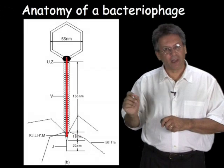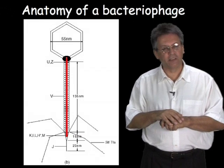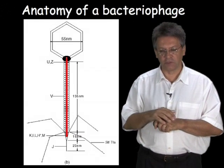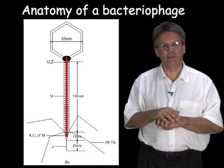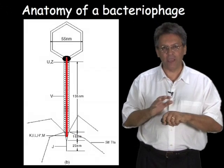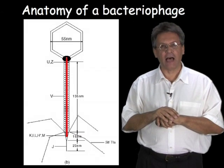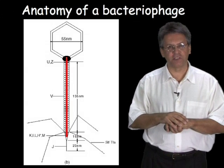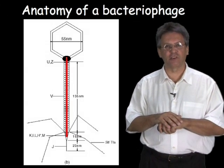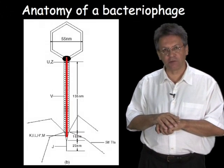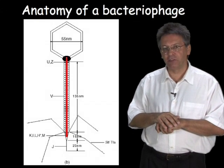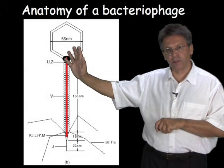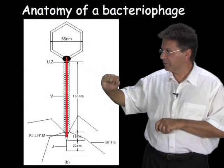It was somewhat later, in the late 1930s and 1940s, that the electron microscope was developed, which has a level of resolution way beyond the light microscope, and was able to show for the very first time what viruses, including bacteriophages, actually looked like. I'll show you some pictures in a minute, but this just shows a stylized example of what one of those phages looked like.